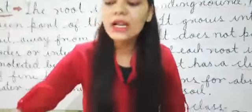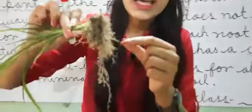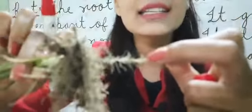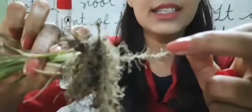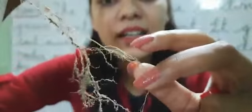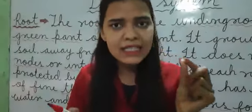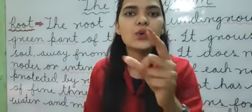Yeh root aapko dikhai de rahi hai, students. Ek root aap dekhenge, is pe aapko chhote-chhote hair-like structure dikhai de raha hai, thread-like structure — dhaage numa, asaan rachna jise aap keh sakte hain. Aur ek cluster toh hai — guchha toh hai — dikhai de raha hai, guchhe ke aakaar mein. Aur jo yeh root hai, yeh consist karti hai small thread-like roots, jinhe kehte hain root hairs — hair ke jaisa hai, patla sa.